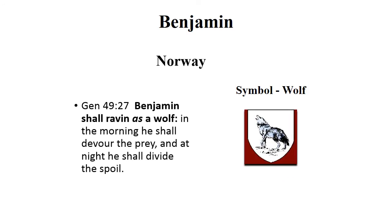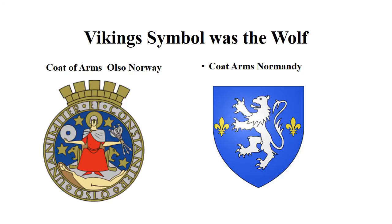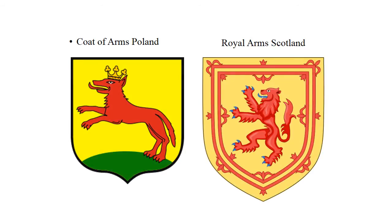The tribe of Benjamin can be found in the area of Norway — they would be the Vikings in history. Their symbol was the wolf, and many of the Vikings went to war with a helmet that had a wolf on it. Genesis 49:27 says 'Benjamin shall be ravenous as a wolf.' Notice the coat of arms of Oslo, Norway — it has two wolves on it. The Vikings eventually settled in Normandy at the top of France, and the coat of arms for Normandy also has a wolf. The coat of arms of Poland and Scotland also have a wolf, and the Vikings eventually moved into the lower part of Scotland.